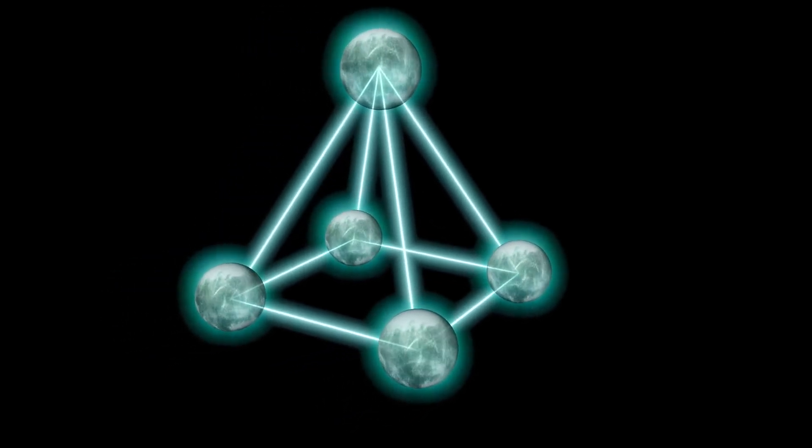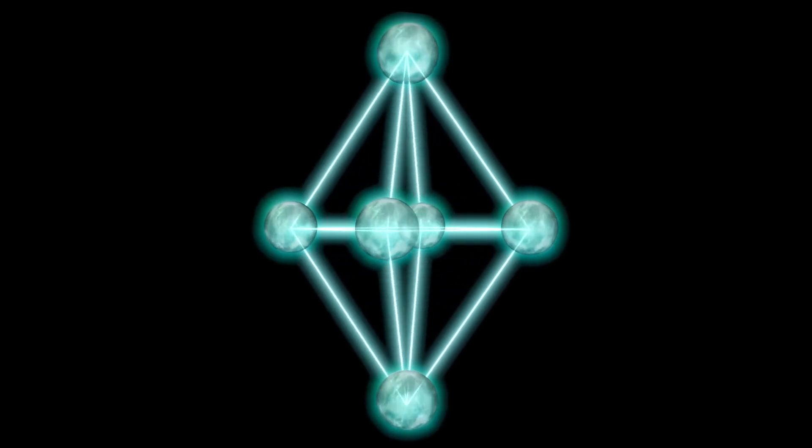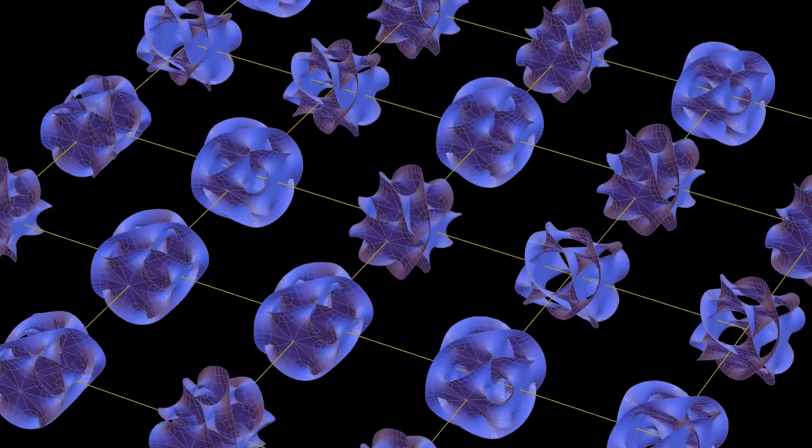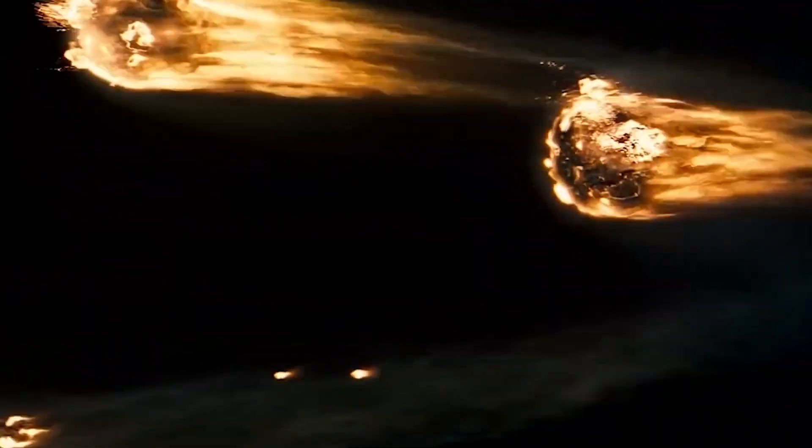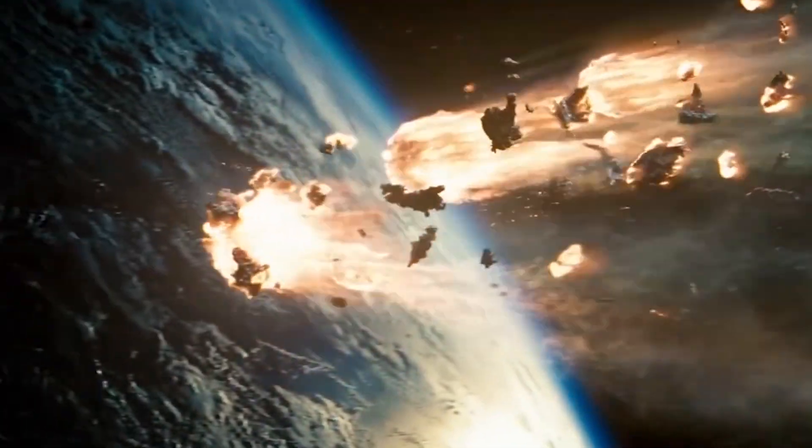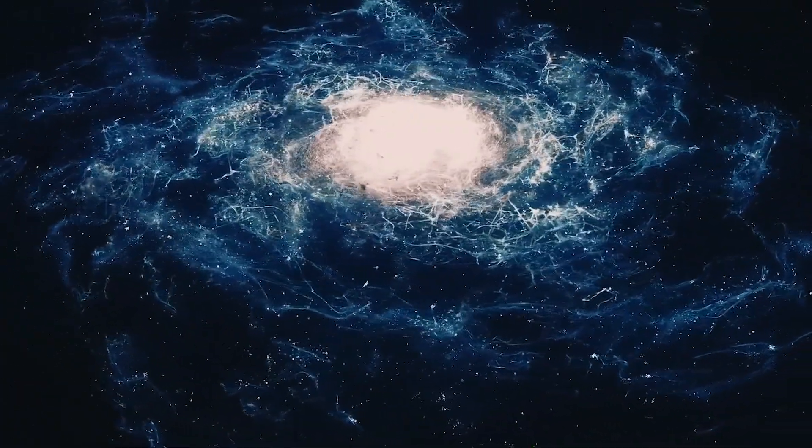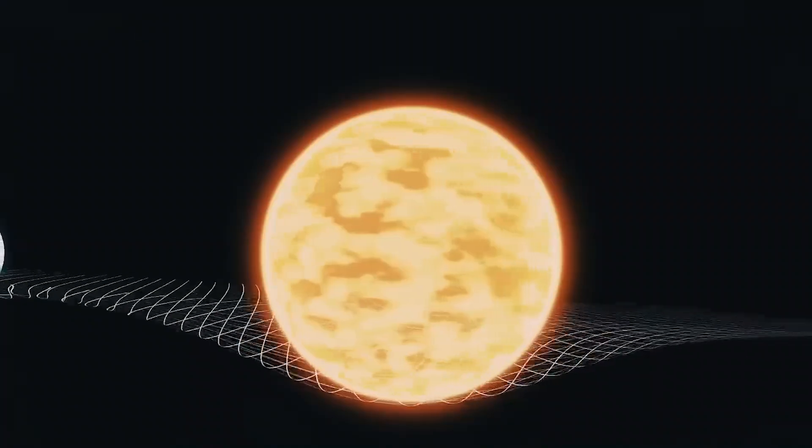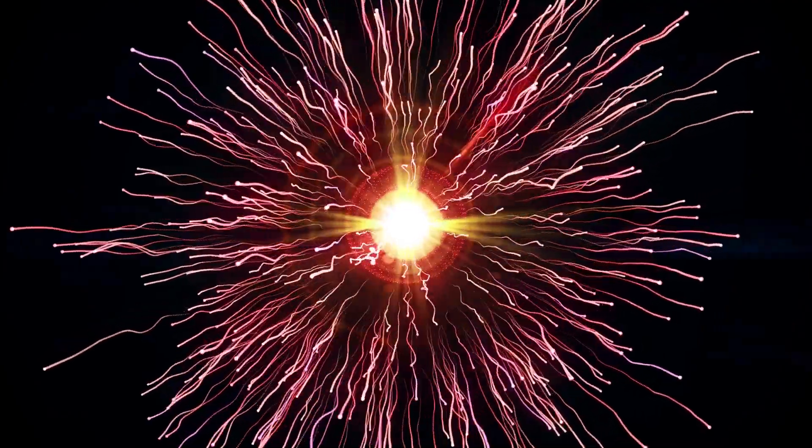The nature of these six compactified dimensions is fascinatingly complex. They are thought to be shaped in specific ways, often described using advanced geometric concepts like Kalabi-Yau manifolds. These shapes are not arbitrary. They play a crucial role in determining the types of particles and forces that exist in the four larger dimensions we inhabit. The way these additional dimensions are configured could also explain why the fundamental forces of nature—gravity, electromagnetism, and the strong and weak nuclear forces—appear so different in strength and character.